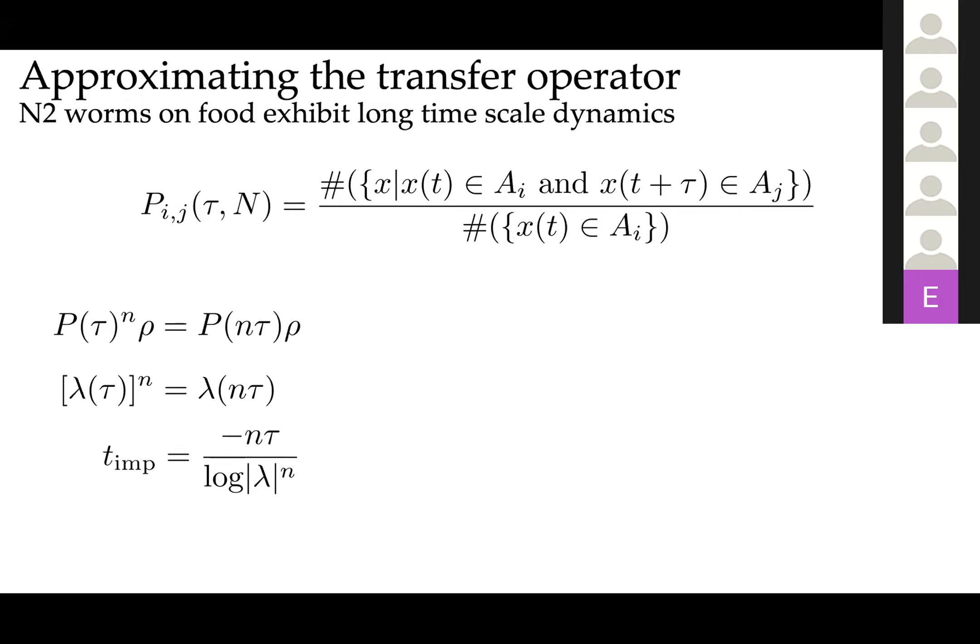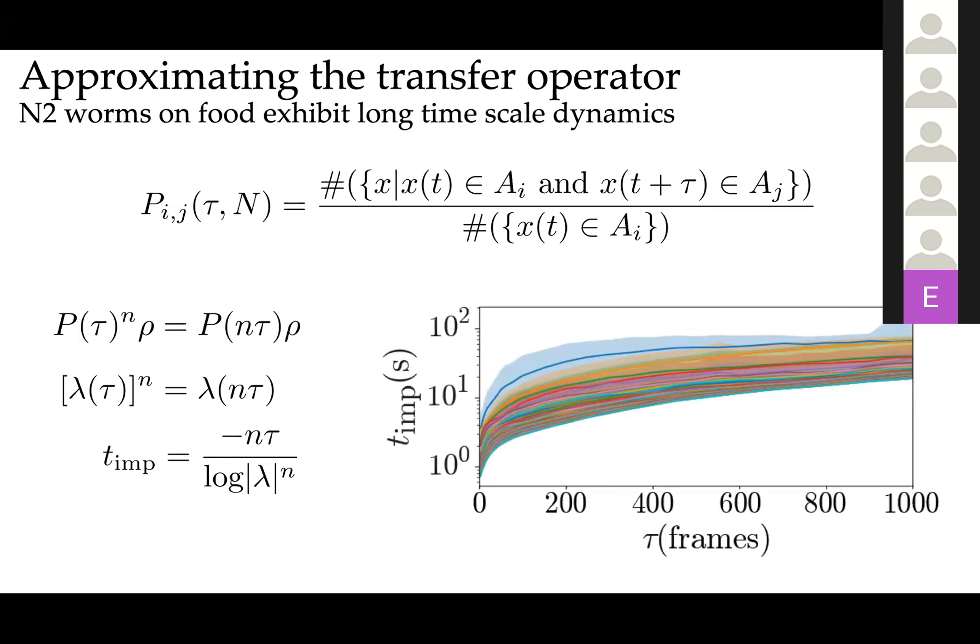For this dataset that I showed you before, what we find is the following. Here I'm only showing you the 20 longest-lived eigenfunctions of the operator—the implied timescales of these eigenfunctions. You can see that some of these eigenfunctions decay over timescales of hundreds of seconds.